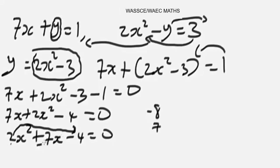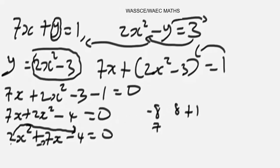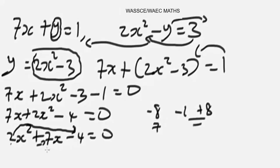Let's find the two numbers. Testing -8 and +1: (-8) × (+1) = -8, and -8 + 1 = -7. That doesn't work. Trying -1 and +8: (-1) × (+8) = -8, and -1 + 8 = +7. That works! So -1 and +8 are the factors we'll use. The -8 has now served its purpose, so we rewrite the middle term using these factors.